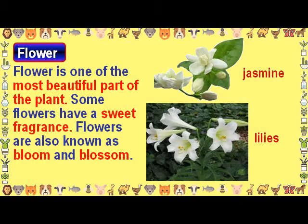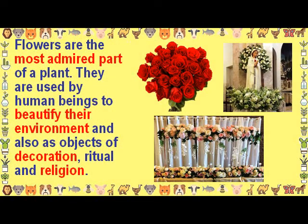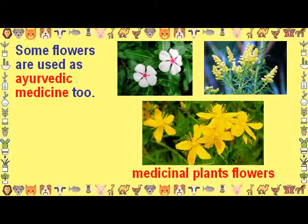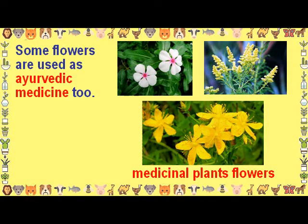Flower: The flower is one of the most beautiful parts of the plant. Some flowers have a sweet fragrance. Flowers are also known as bloom and blossom. They are used by human beings to beautify their environment and also as objects of decoration, ritual, and religion. Some flowers are used as Ayurvedic medicine too.